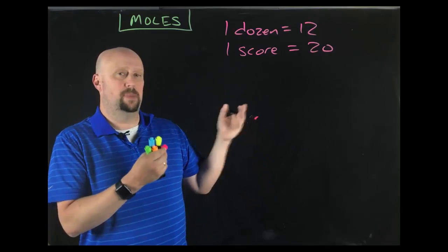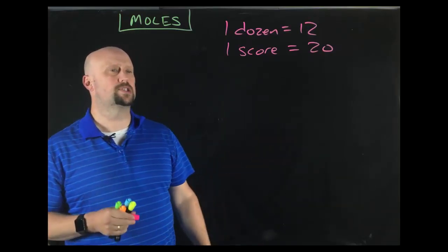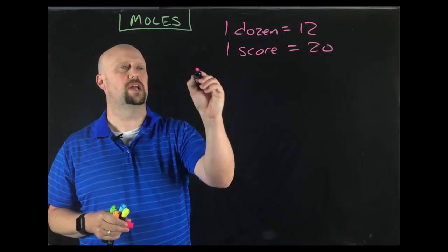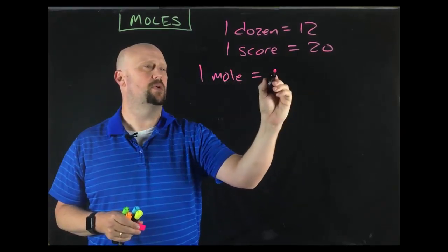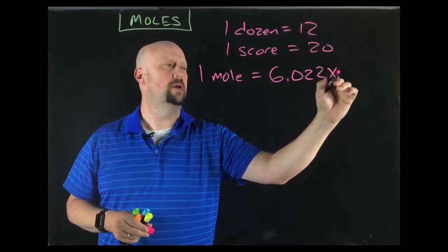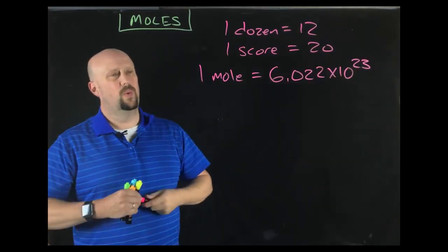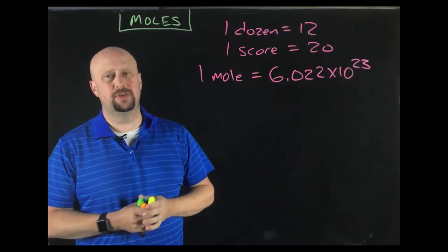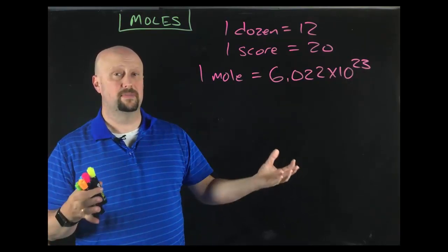If you had a pair of teachers, then that would be two teachers. So a mole works sort of like that. And so here's the definition of a mole. One mole is equal to this really big number. One mole is 6.022 times 10 to the 23rd of whatever.